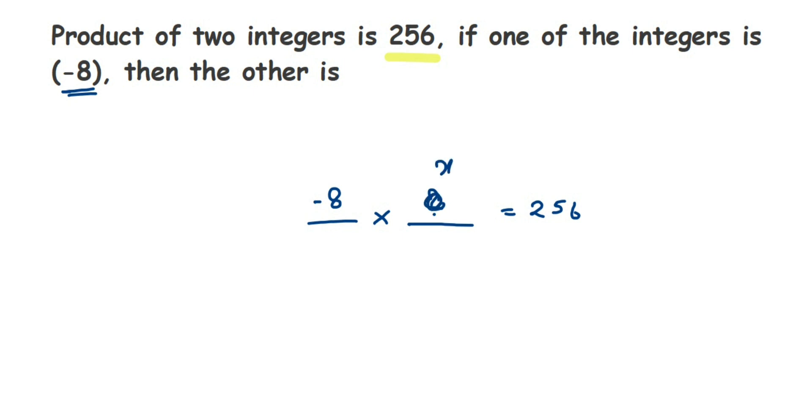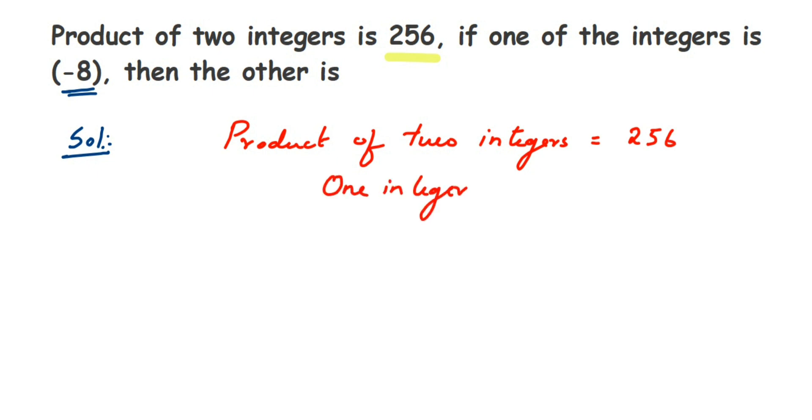So this other number I'm gonna assume as X. Let me just frame this once again. So here is the solution. They have given product of two integers is equal to 256, and one integer is equal to -8. We have to find out the other one.